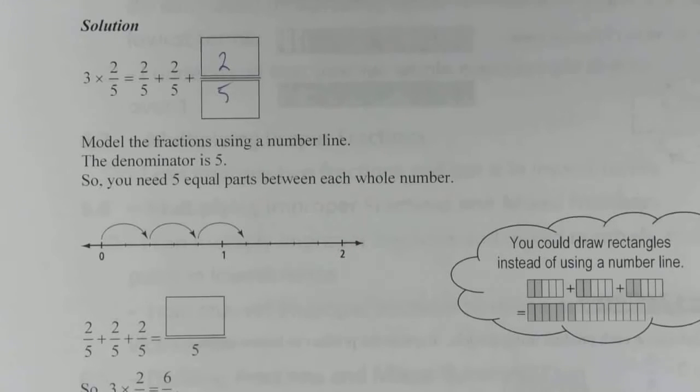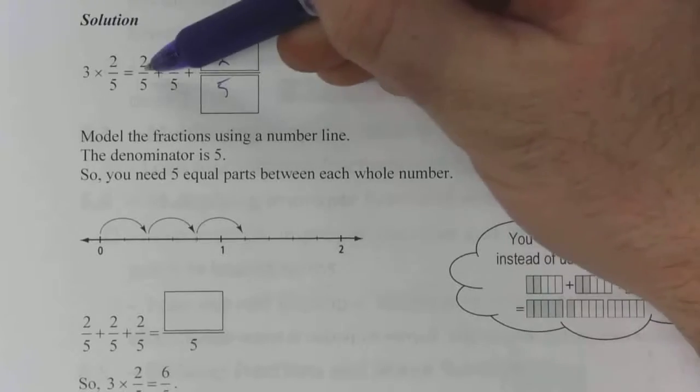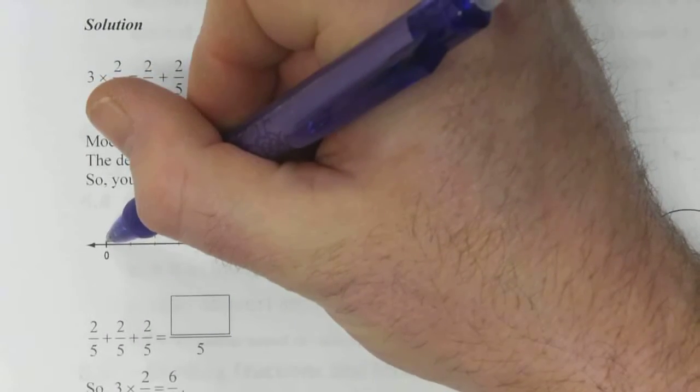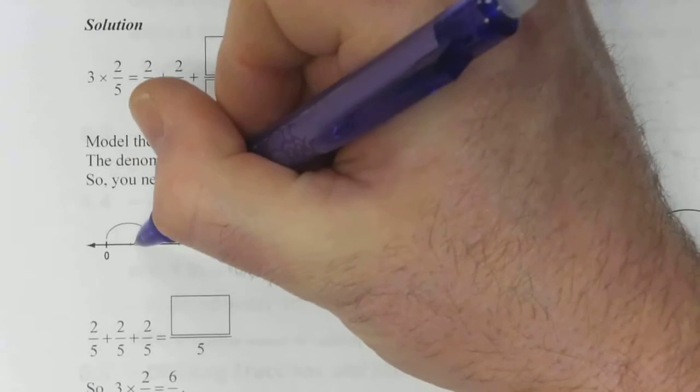So when you do that, and you're adding two-fifths three times, you start at zero. Two-fifths is the equivalent of two jumps, or two spaces. So that's one.